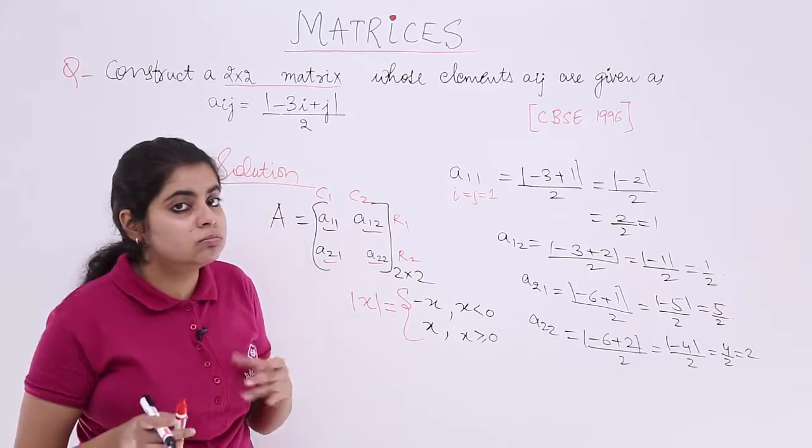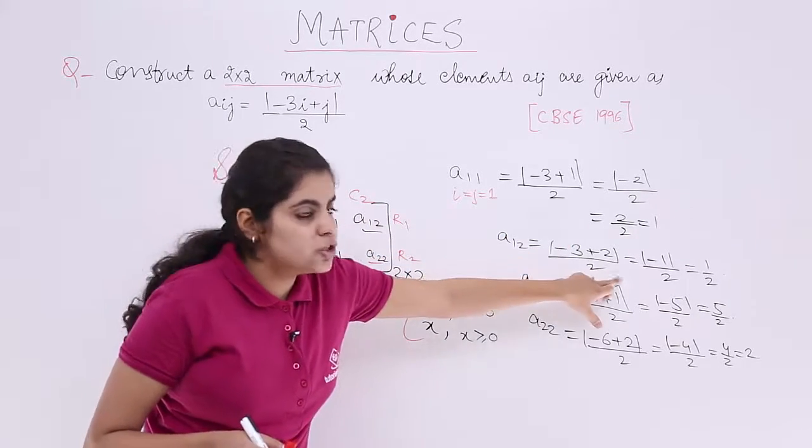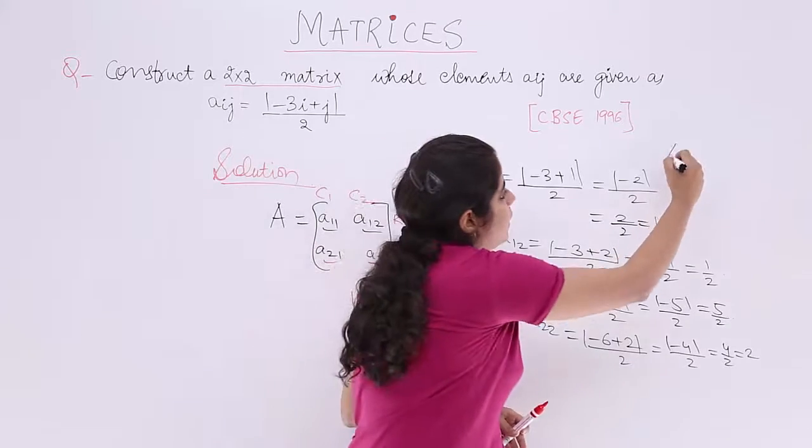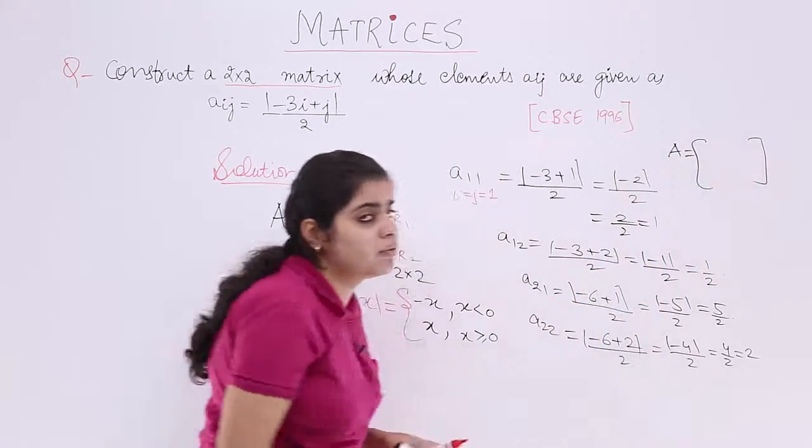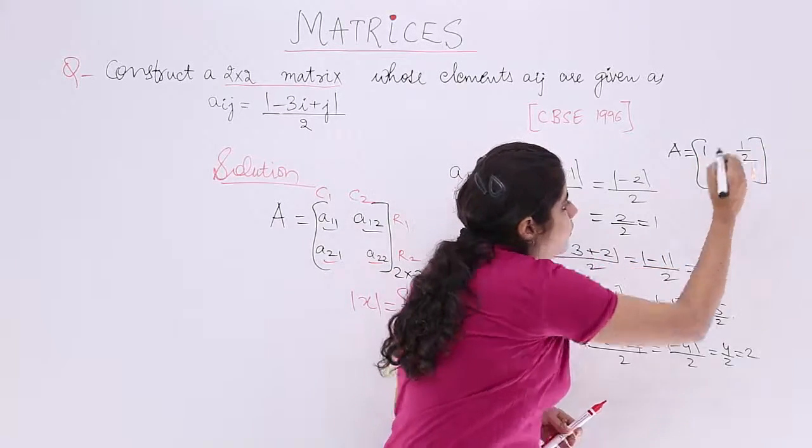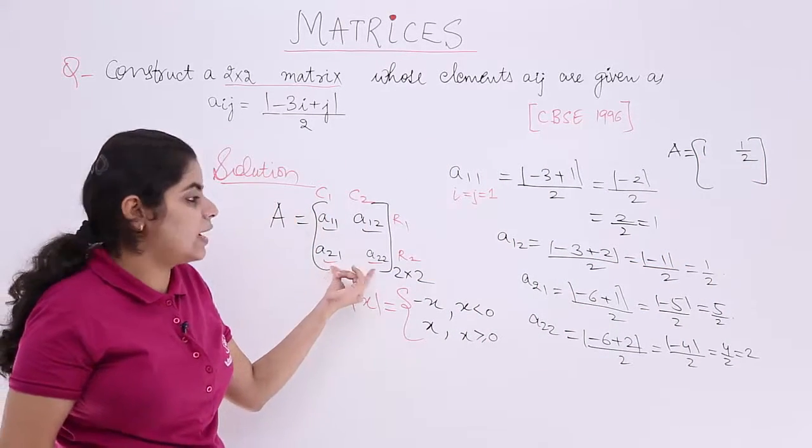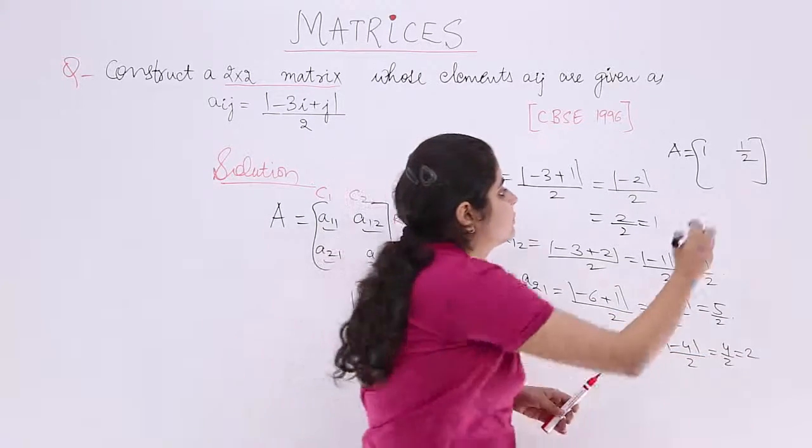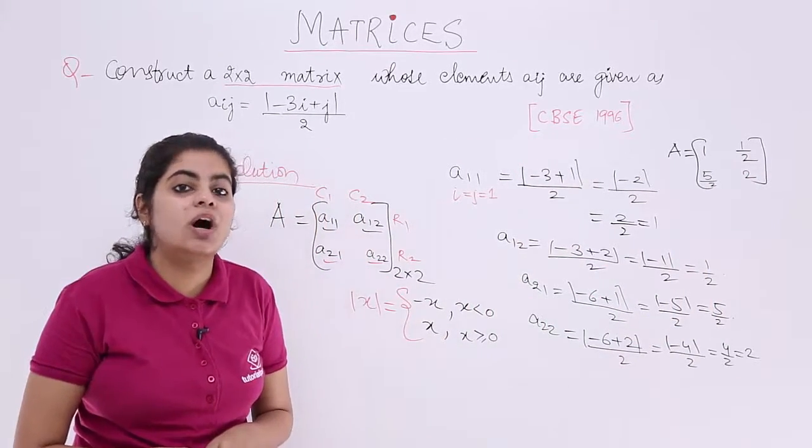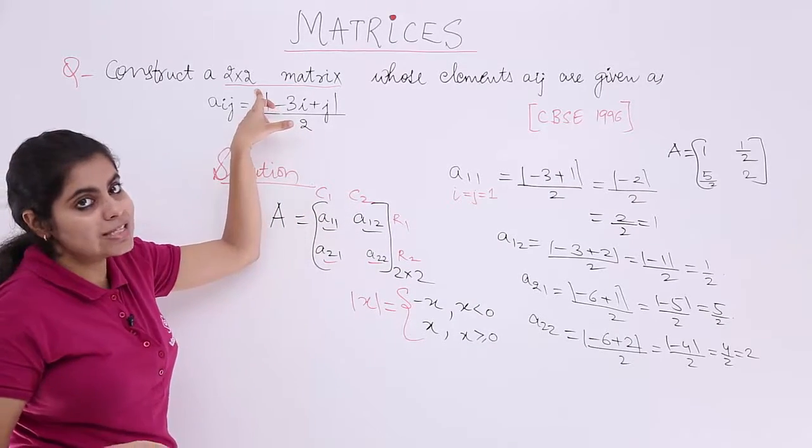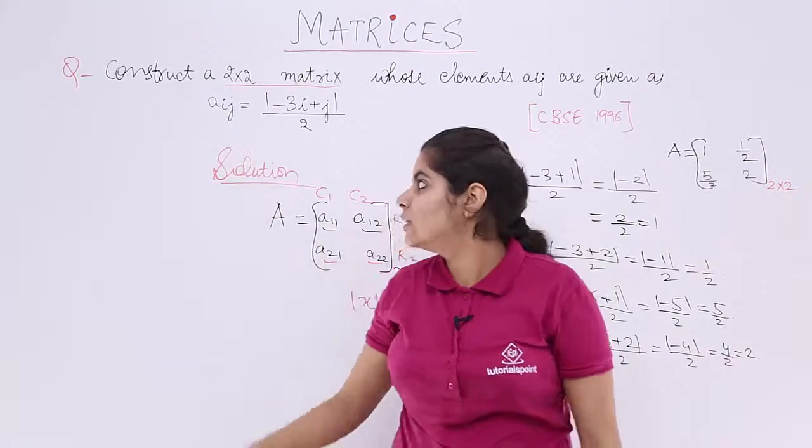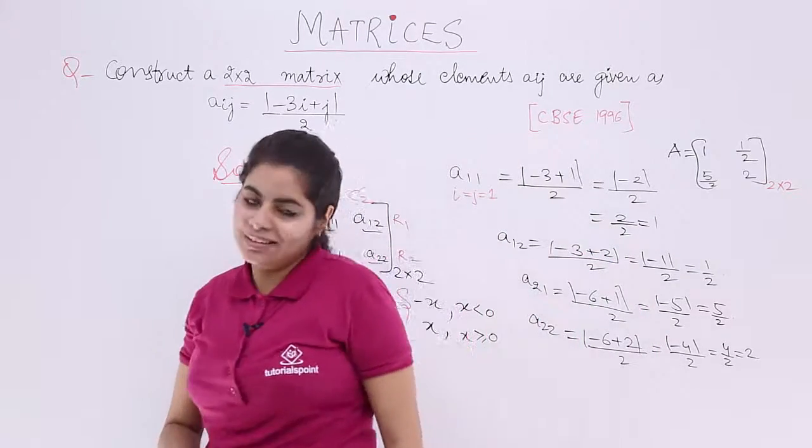So you have all the elements now. Let's repeat: 1, 1 by 2, A21 is 5 by 2, A22 is 2. So how would the final answer of the matrix be? It would be simply a matrix with the 4 elements. A11, A12 in the first row, so that is 1 and 1 by 2. And the second row has A21, A22, so that is 5 by 2 and 2. This is the final answer for the matrix. In this video we saw a matrix of order 2 by 2 which has 2 rows and 2 columns. The rule is given to me. You just have to put the values in the given rule and obtain the answer.